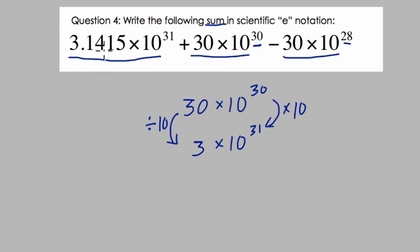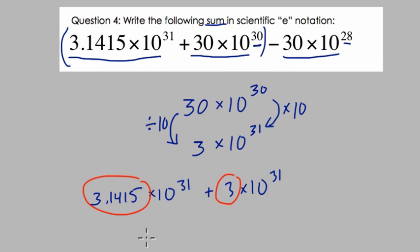So now we can start adding. I'm going to group these numbers together first. We have 3.1415 times 10 to the 31st, plus 3 times 10 to the 31st. So we're adding in terms of 10 to the 31st. That just means we can add this number and this number directly. And that's 6.1415 times 10 to the 31st.